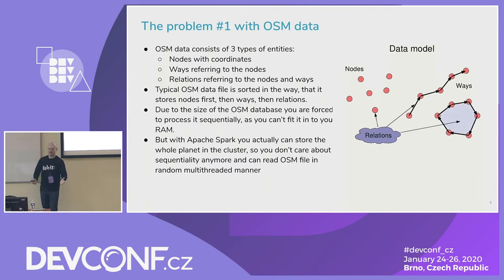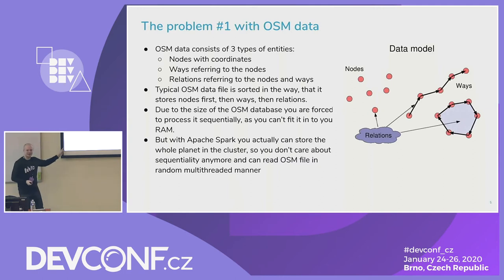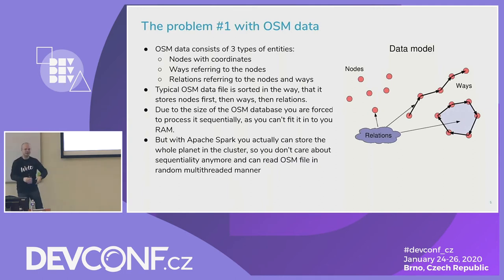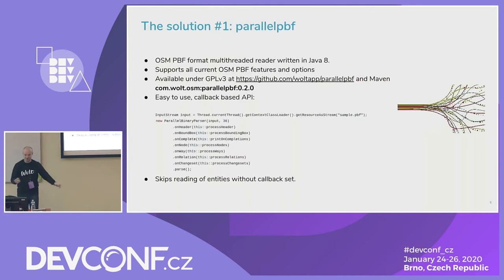But with Spark we can keep our entire dataset — the whole planet — in memory. That means we don't need to read it sequentially. We can read it randomly, put it into RAM, and then process. The solution is a parallel PBF reader.